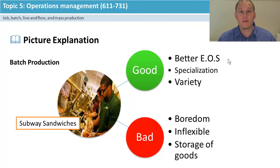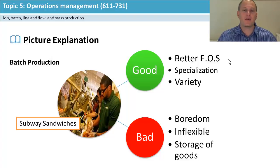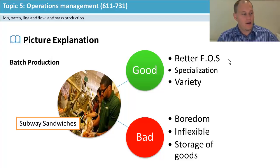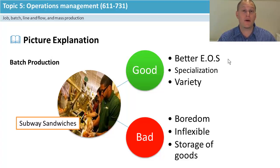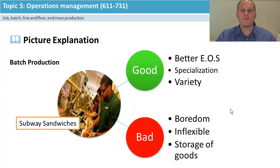Batch production allows a lot of variety — all the varieties of bread, meats, and salads you can pick. Because of this you can meet what the customer wants. Compare that to line, flow and mass — Henry Ford said you can have whatever color you want as long as it's black. In Subway and Hungry Jack's, you can have it your way.